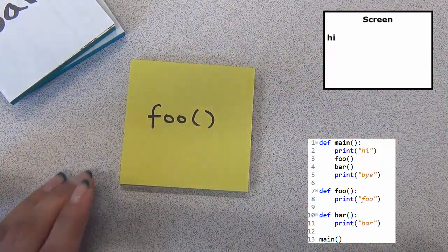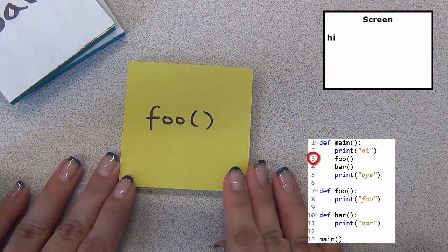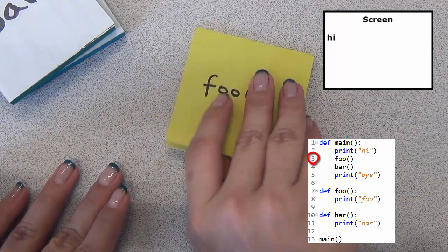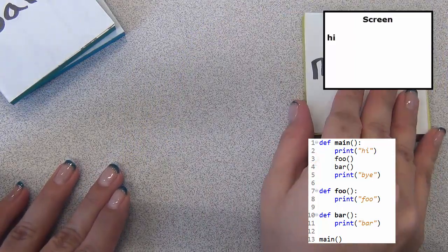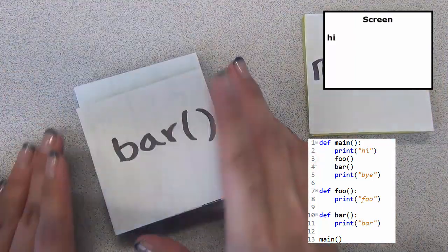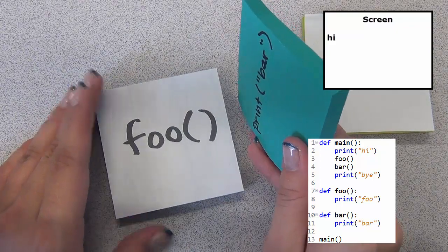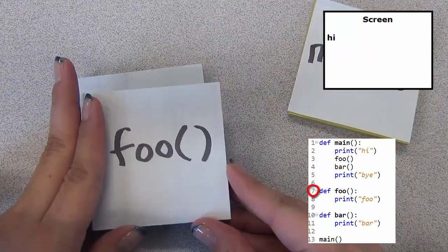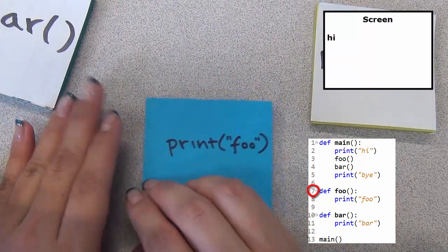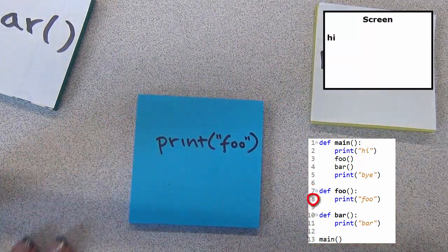Then we go to the next line, which calls the function foo. We leave behind the execution of main, look for the function foo, and begin executing it from the first line. The first line prints foo to the screen.